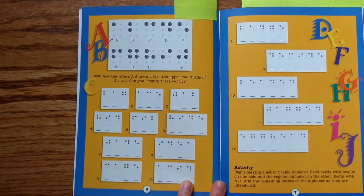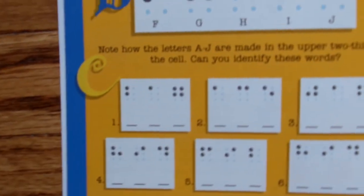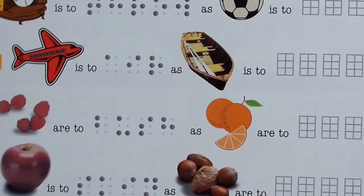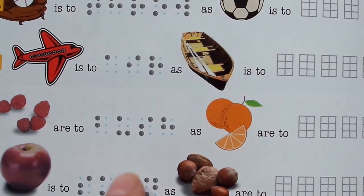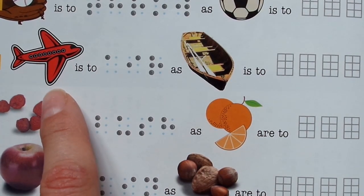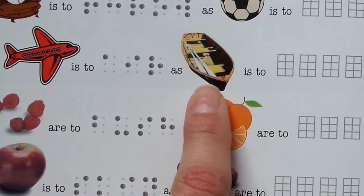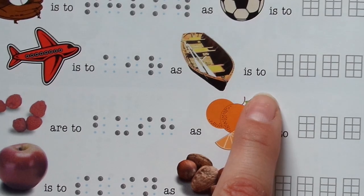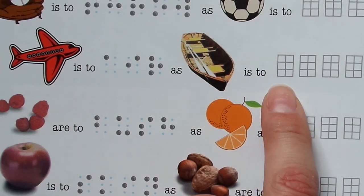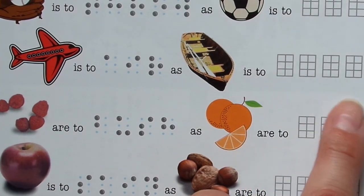And there's fun games in here, like there's a picture of an airplane. It says airplane is to air, and air is written in braille, as boat, there's a picture of a boat, is to blank, and there are blank braille cells, and you get to fill in the answer.